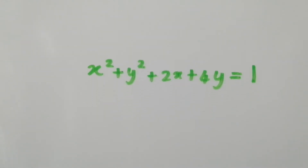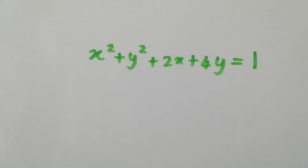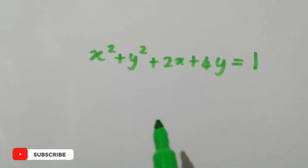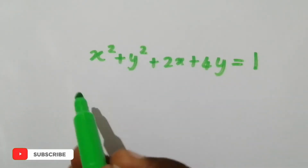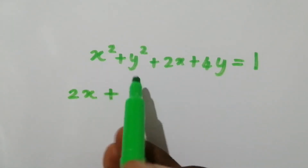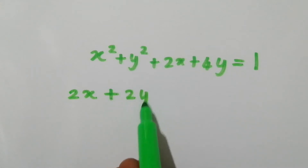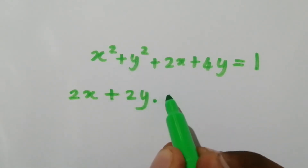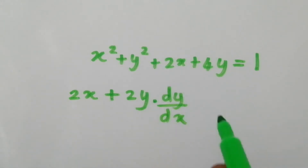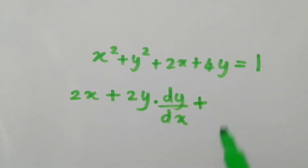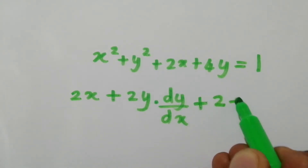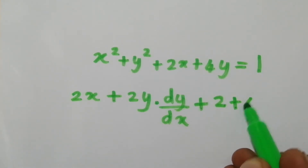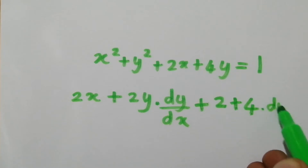For this type of function, there is a way of differentiating. We can differentiate both the left side and right side with respect to x. The differentiation of x squared is going to be 2x, plus when I differentiate y squared it is going to be 2y times dy/dx, plus the derivative of 2x is 2, plus the derivative of 4y is 4 times dy/dx.